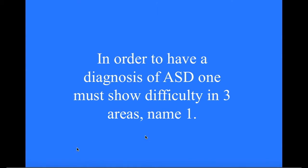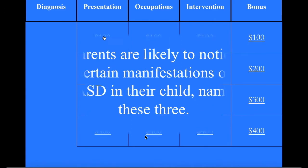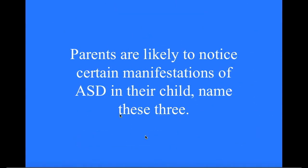Diagnosis for 400: In order to have a diagnosis of ASD, one must show difficulty in three areas — name one. What is how one communicates non-verbally? Correct. The other two are having and holding a social or emotional interaction, and forming socially involved relationships.